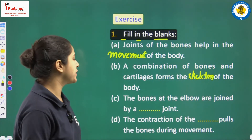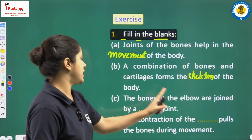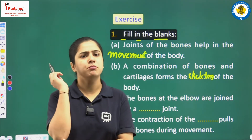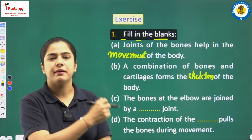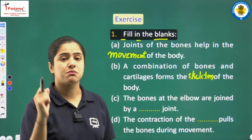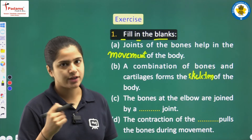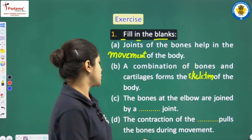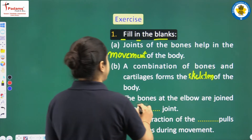The next blank: the bones at the elbow are joined by a blank joint. Which joint joins the bones at our elbow? It is the hinge joint, because the elbow moves in a to-and-fro direction — we had learned that the movement of a gate and the movement of a hinge joint are similar. So the bones at the elbow are joined by a hinge joint.